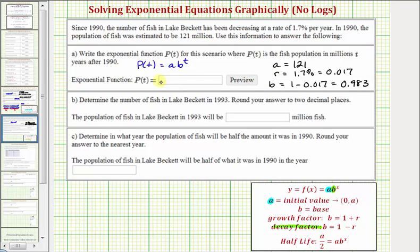Now that we know a and b, we know our exponential function is p of t equals 121 times 0.983 raised to the power of t.